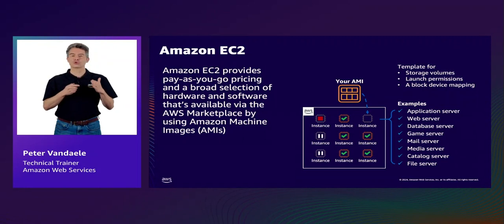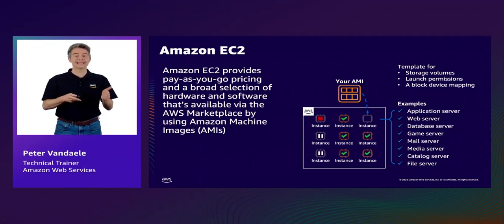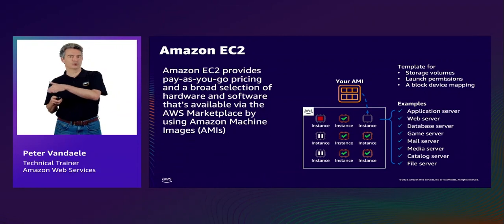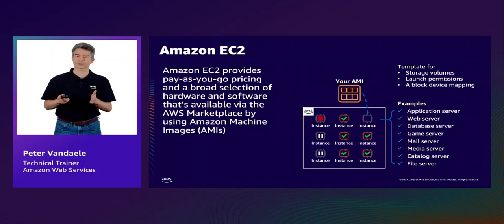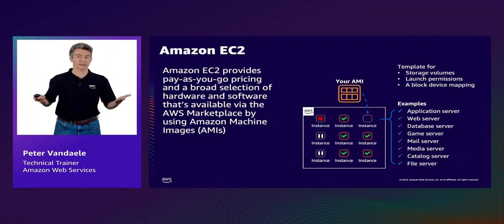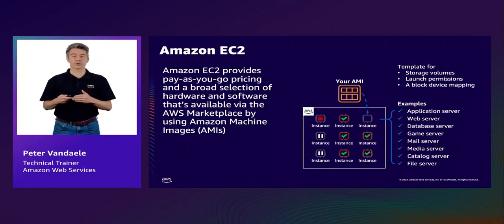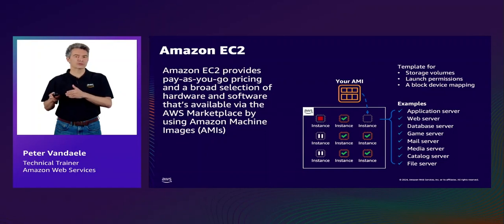When deploying an EC2, you make a choice about both the hardware and the software. For the latter, you must specify the Amazon Machine Image or AMI. An AMI provides the information required to launch an instance, such as the operating system of choice, storage volumes, launch permissions, and block device mapping. You could also have custom applications pre-installed to speed up deployment time. One source to get customized AMIs is the AWS Marketplace, where you can purchase Amazon Machine Images from trusted partners. EC2 can be a web server, an application server, a database server, and thinking of EC2 as disposable allows you to take advantage of pay-as-you-go pricing, significantly reducing your overall cost.